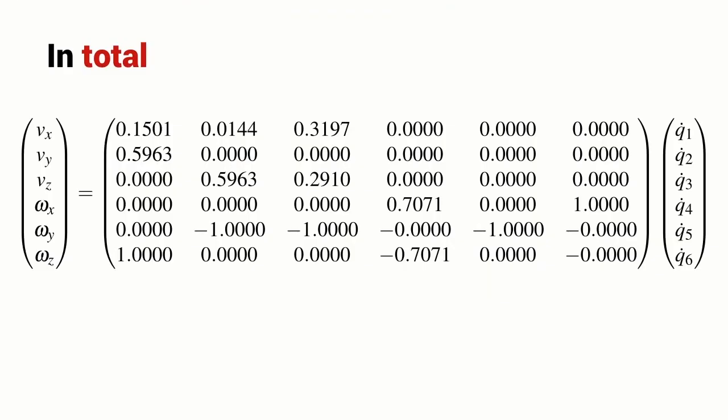A useful way to think about the Jacobian matrix is in terms of what the individual columns mean. The first column of the Jacobian matrix multiplied by the rate of change of the first joint gives me a contribution to the end effector's spatial velocity and this column gives me a component of end effector velocity due to Q2.